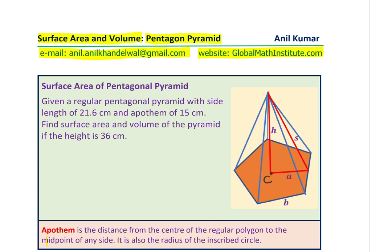Now let's talk about the question. It says, given a regular pentagonal pyramid with side length of 21.6 cm and apothem of 15 cm. So that is given to us as shown here.